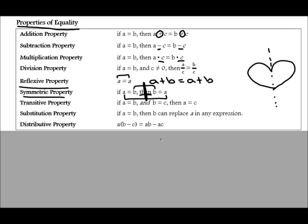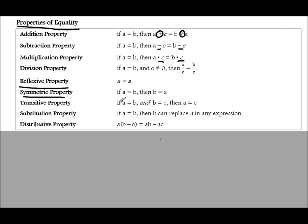The transitive property is where you have a equals b and b equals c, with two of the same terms back to back. Then you can conclude — cut out the middleman, the two back-to-back terms — and conclude that a equals c.